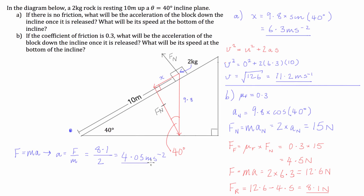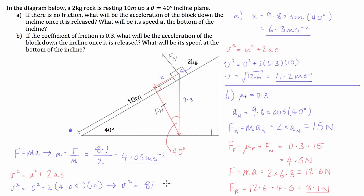What will be its speed at the bottom of the incline? Like part A, we use v squared equals u squared plus 2 times acceleration times distance. Entering our values: final velocity squared equals 0 squared plus 2 times 4.05 times 10. So v squared is 4.05 times 2 times 10, which is 81. Therefore the final velocity at the bottom of the hill is equal to the square root of 81, which equals 9 meters per second. And that is our final answer for B.